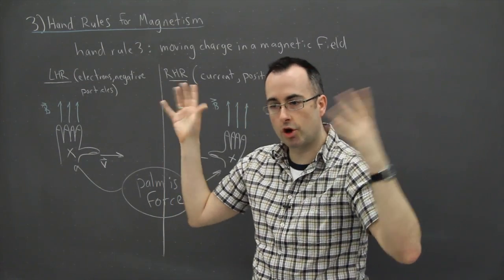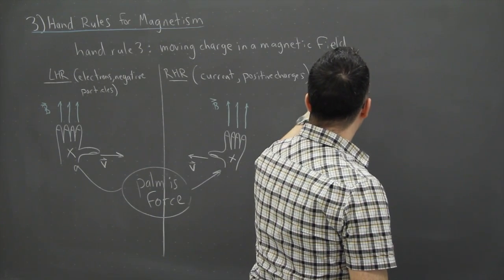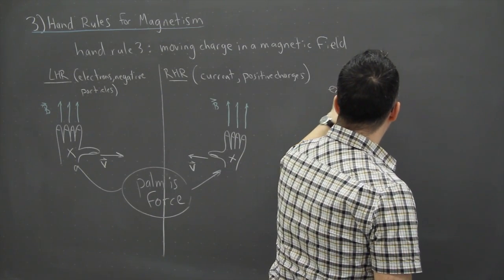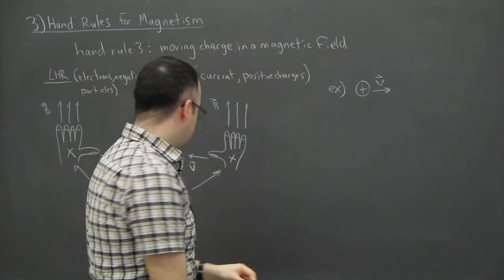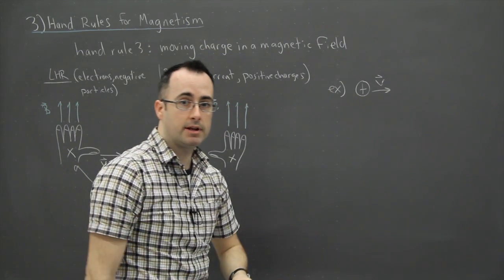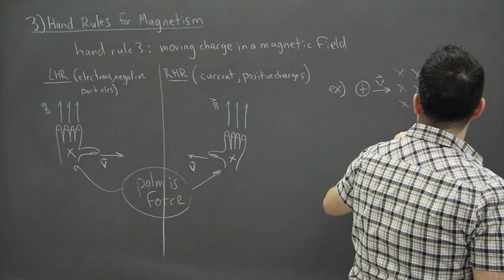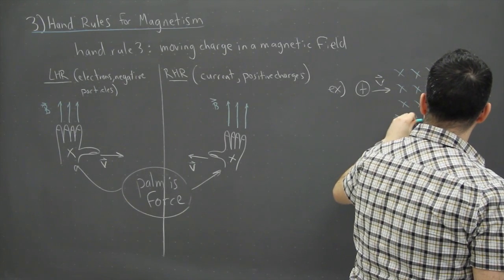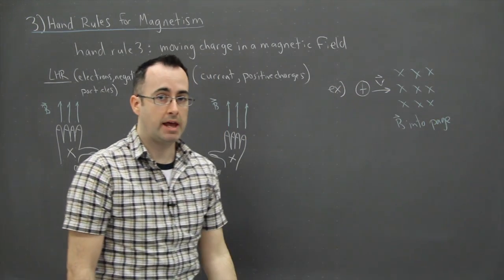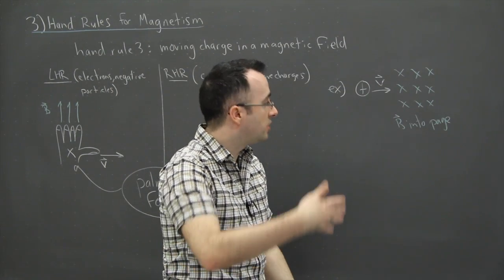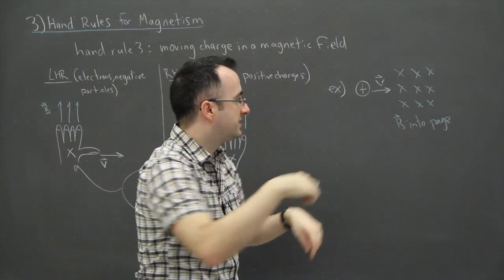So this is how I like to remember the third hand rule for showing these things. Now maybe I should give you a few examples just to show how this is used. So maybe my example is, let's say it's a positive particle going to the right. So if I have a positive particle going to the right and it's going to enter a magnetic field, and I'm trying to keep this in 3D, so my magnetic field is going to be a bunch of X's. What I'm going to write here is B into page, that's what this really represents.